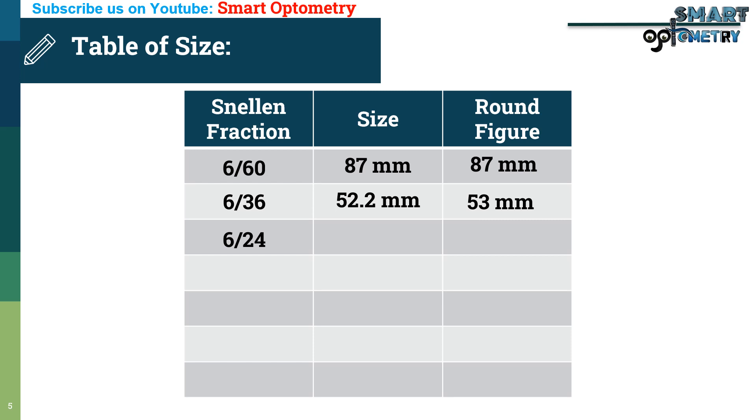Size of 6 by 24 is 34.8. Or, in round figure 35 millimeter. Size of 6 by 18 is 26.1 millimeter. Or, in round figure 27 millimeter.